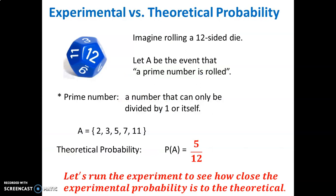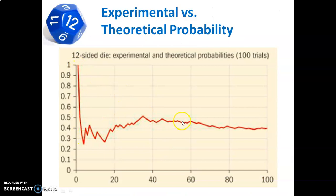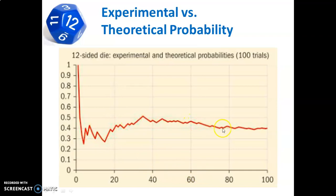Here is that shown graphically. When there's a small number of trials, the experimental probability can produce any kind of number. But as you run more trials, that experimental probability jumps around and eventually, over many, many trials, the experimental probability settles in at one value — 0.41, which is the theoretical five out of twelve expected over the long term.